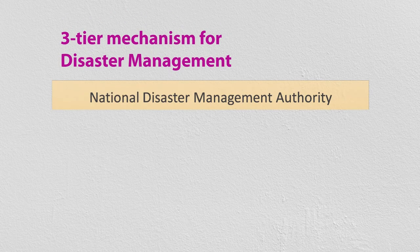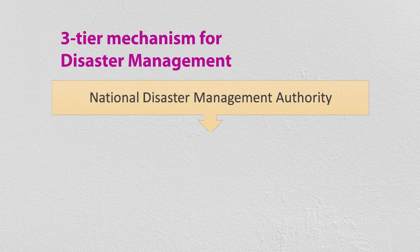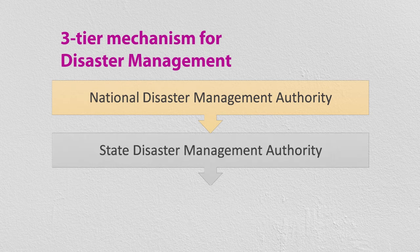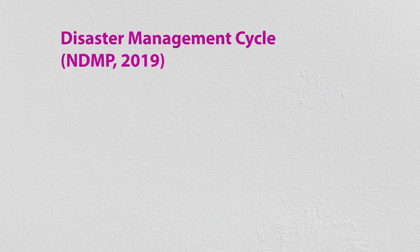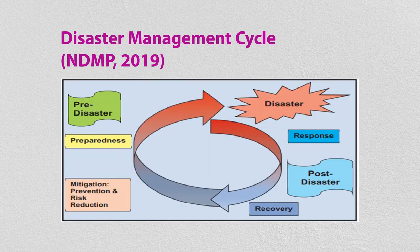Generally in India, we have a three-tier mechanism for disaster management. At the highest level there is the National Disaster Management Authority (NDMA). On the same lines, states have State Disaster Management Authorities, and at the district level we have District Disaster Management Authorities. The National Disaster Management Plan (NDMP) in 2019 proposed a disaster management cycle — a cyclic process covering what needs to be done during the disaster, post-disaster, and pre-disaster.